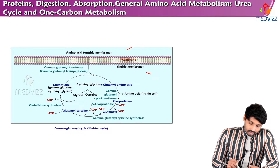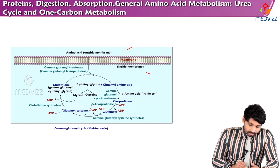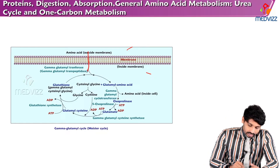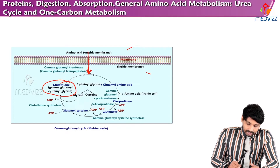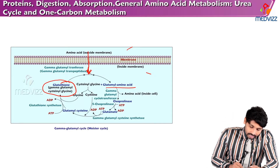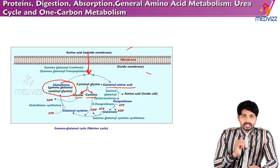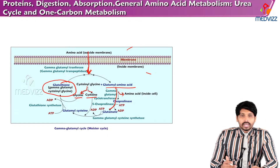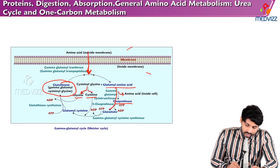In the diagrammatic representation, the cell outside and inside are shown. When an amino acid approaches from outside, the transporter gamma-glutamyl transferase facilitates glutathione taking up the amino acid. Once glutathione accepts the amino acid, it is split into cysteinylglycine and the glutamyl-amino acid. The cysteinylglycine is then split into glycine and cysteine. The glutamyl-amino acid releases its amino acid, and the glutamyl portion is converted to glutamate by the enzyme 5-oxoprolinase. Glutamate then accepts cysteine to form gamma-glutamyl cysteine.